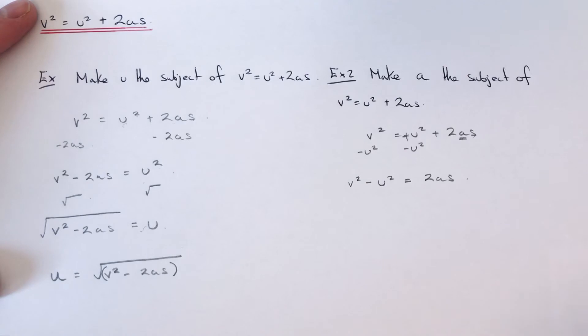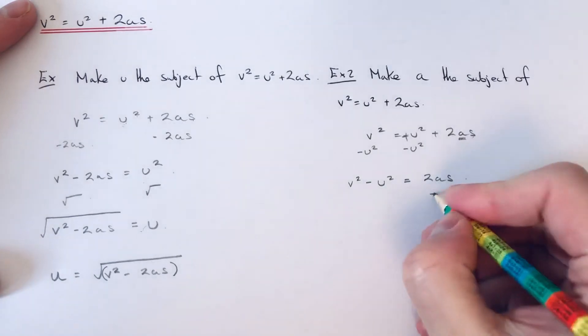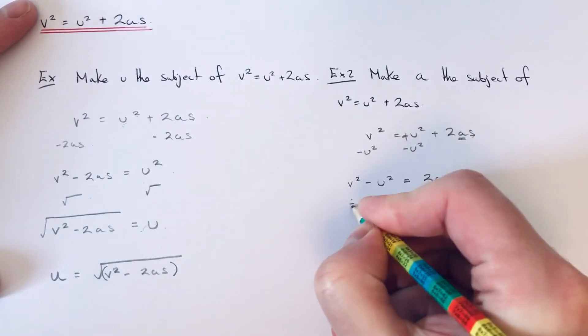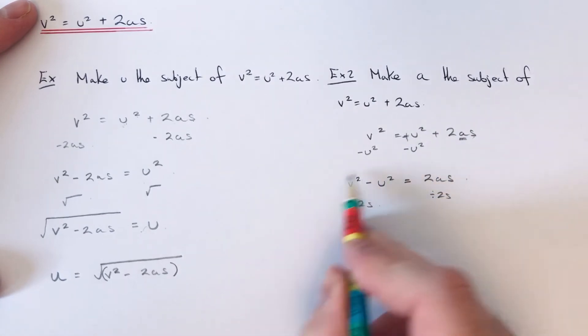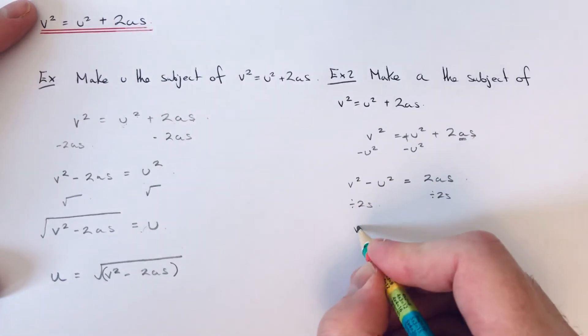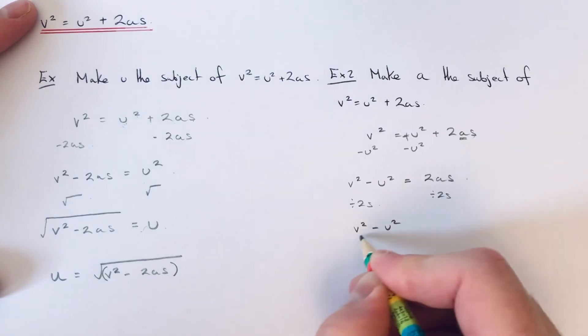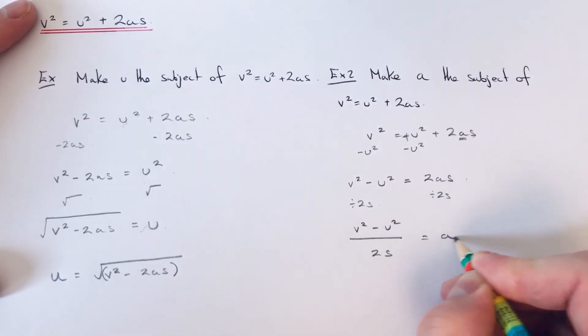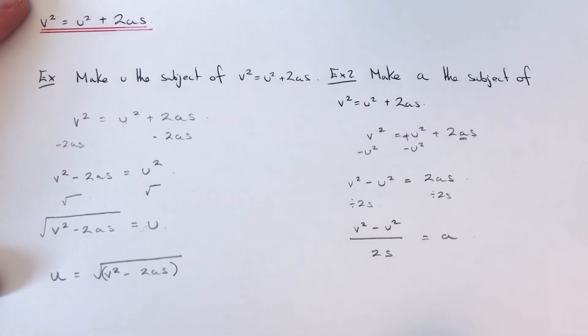Remember, a is now being multiplied by 2s, so we just need to divide both sides by 2s. We need to do it as a fraction like this. We've now made a the subject. If you rewrite it with a at the start: a = (v² - u²) / 2s.